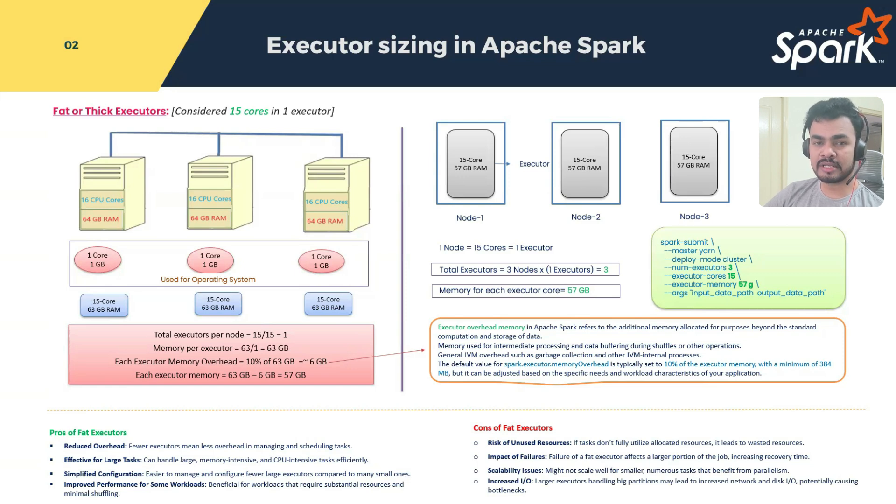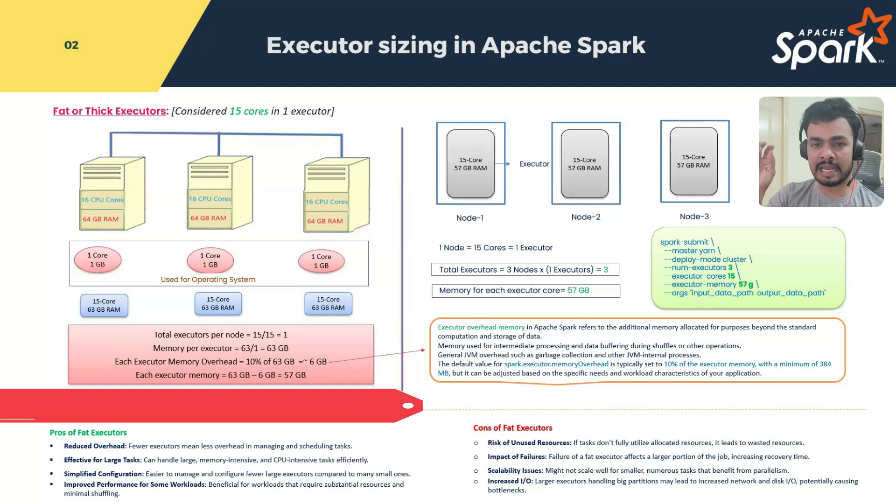Increased I/O. You know, if 15 cores are inside, then when you are writing something, reading something, then there could be I/O write, input and output operations. So since data is huge, definitely you may have to face this situation where larger executors handling big partitions may lead to increased network and disk I/O, potentially causing bottlenecks. So these are the advantages and disadvantages of fat executors.